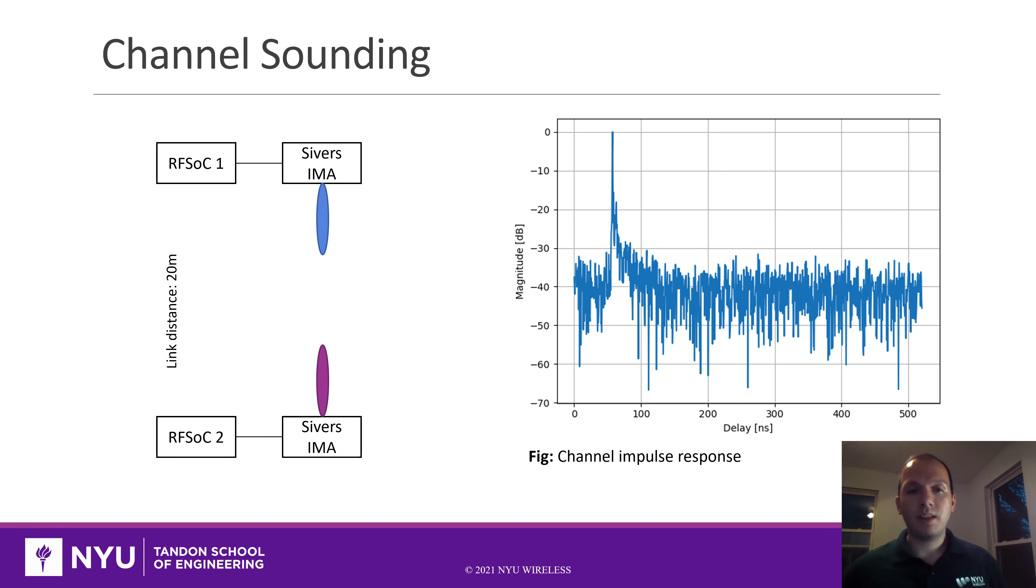Another example is the channel sounding sequence. We basically send a continuous wave signal and do a frequency domain channel sounder. At the receiver, we do the correlation and estimate the channel. On the right, you can see for a specific configuration what was the channel impulse response.